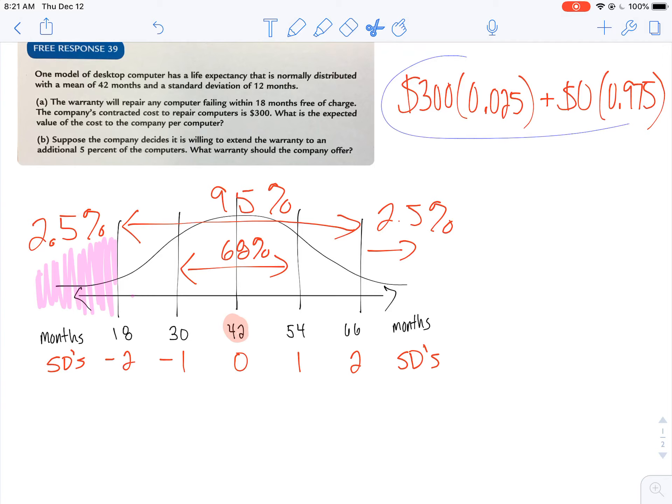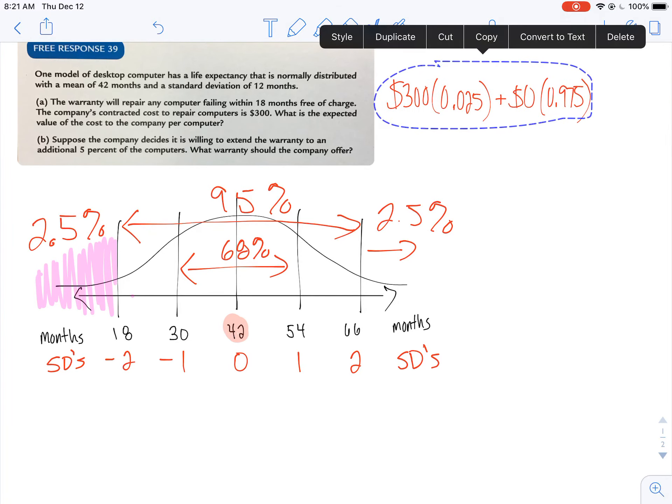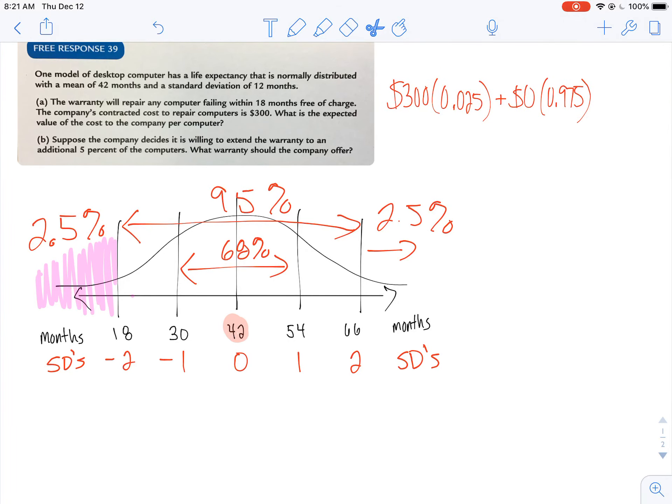So what this is going to tell me is the expected value per computer that they should expect to pay. Again, because $300 for 2.5% and then $0 for the remaining 97.5%.